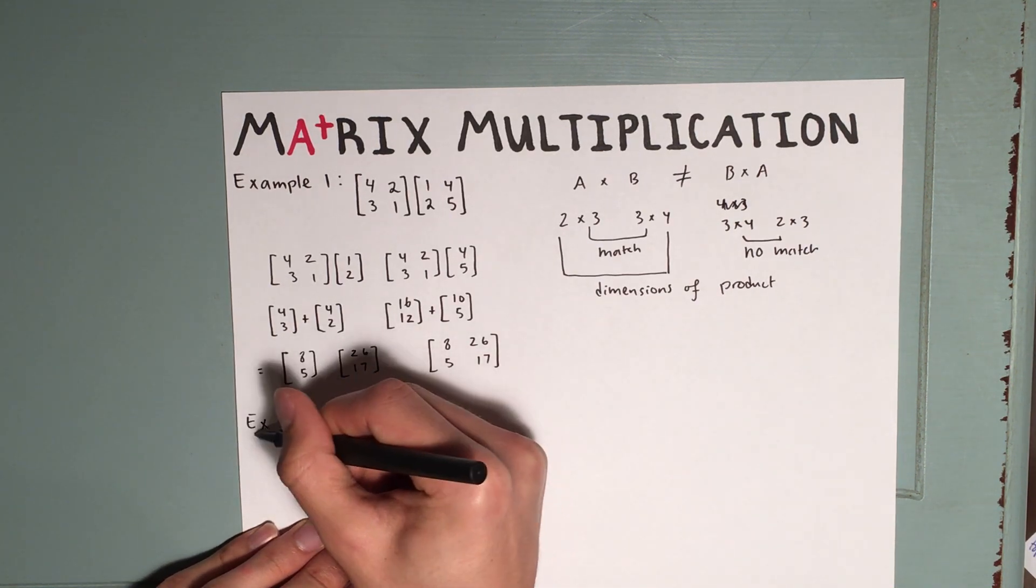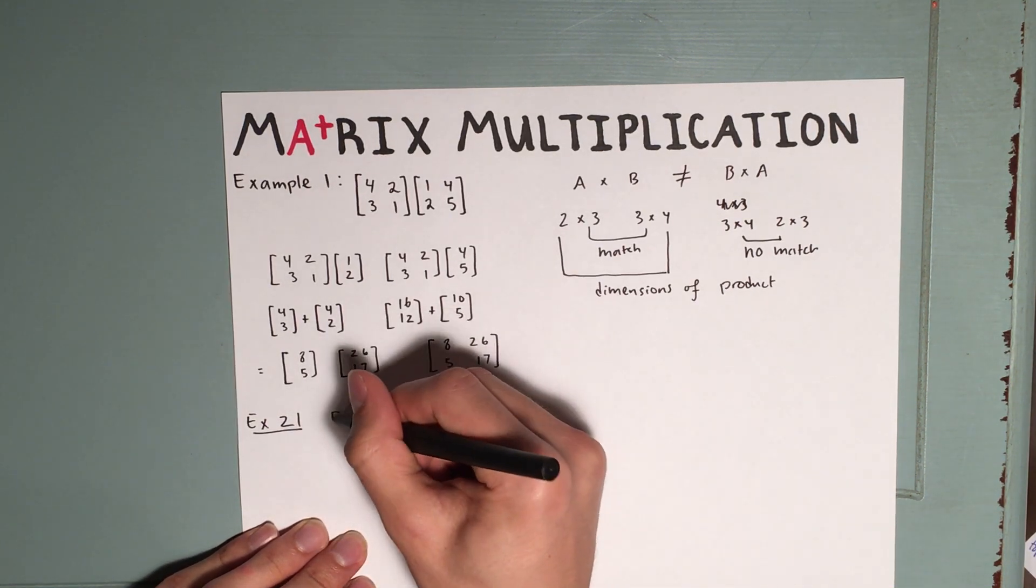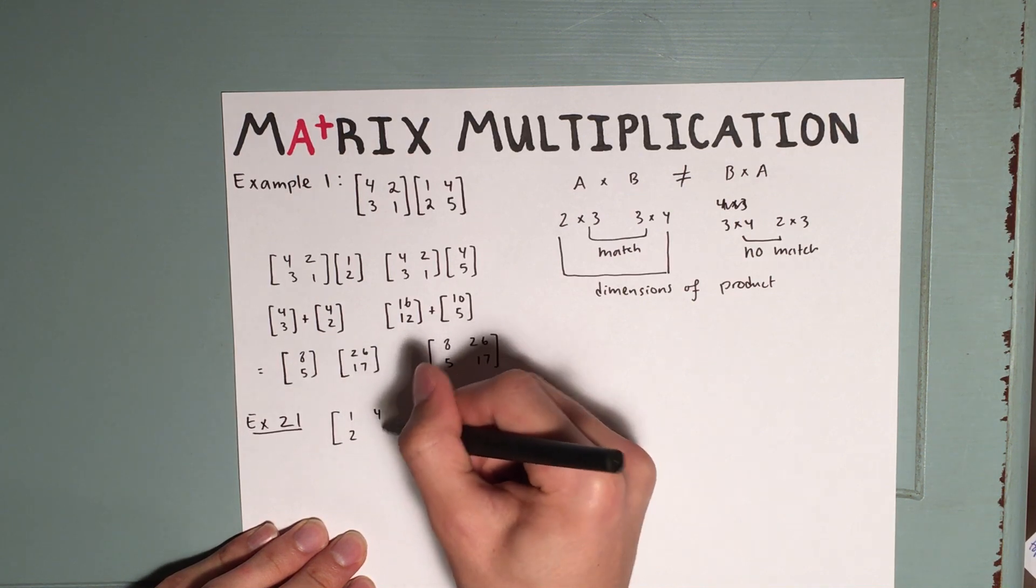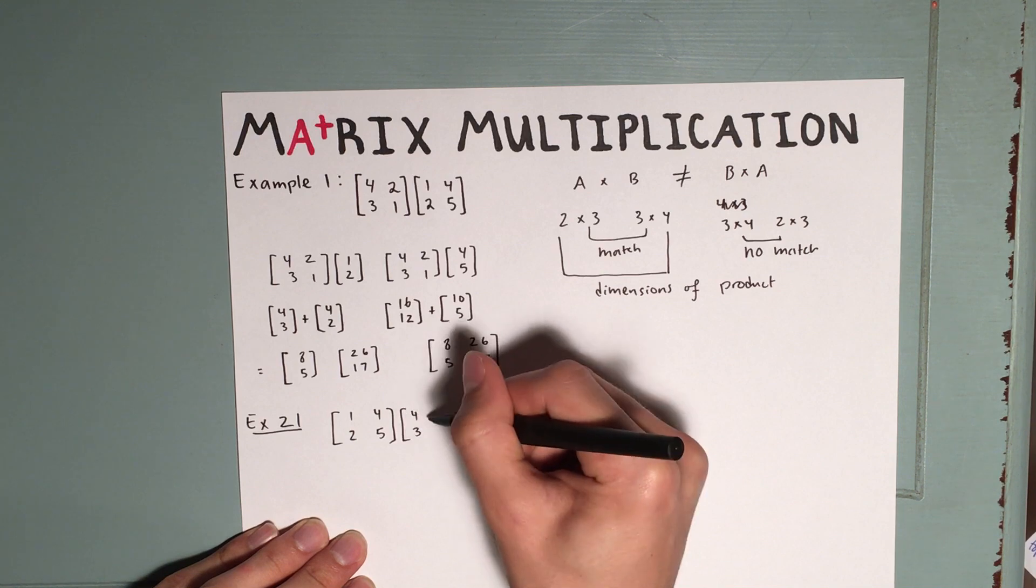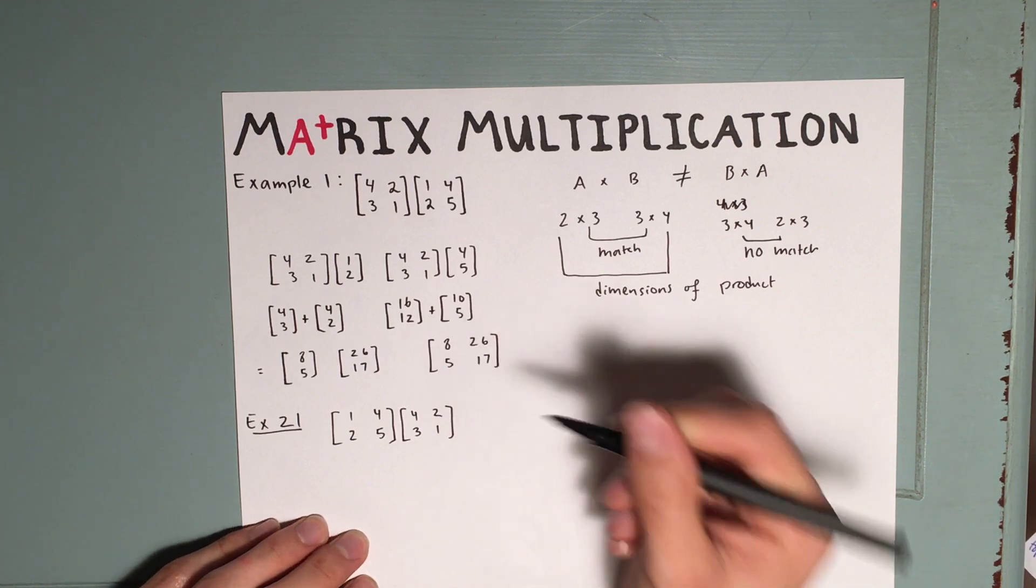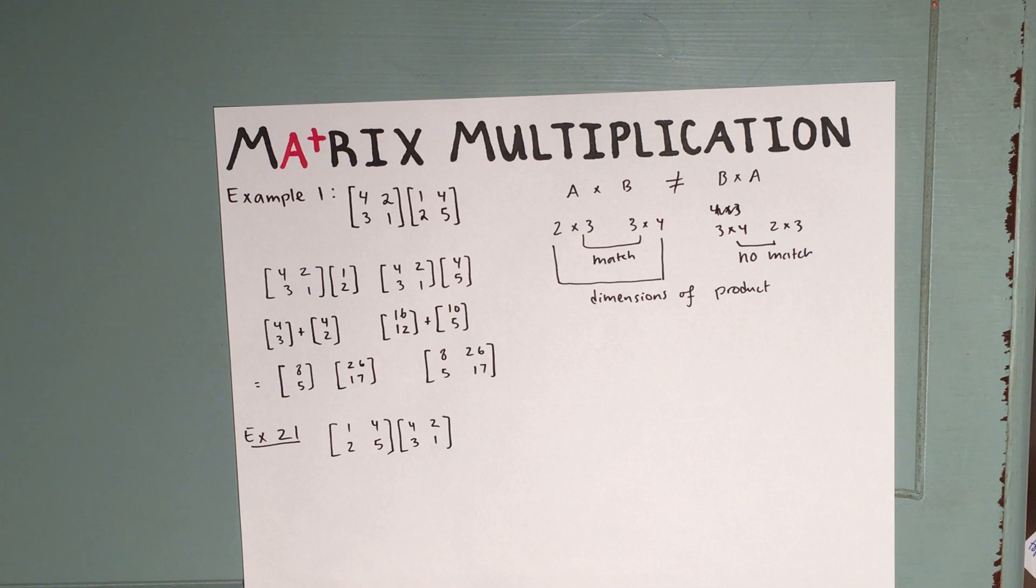Example 2. We have 1, 2, 4, 5 and 4, 3, 2, 1. At this point, I do recommend pausing the video and trying the multiplication for yourself. But I'll continue now.